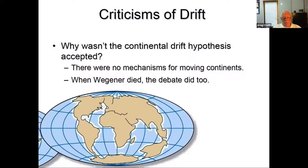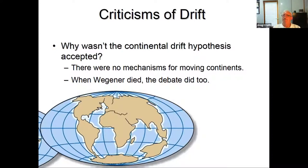It was a pretty good body of evidence for someone working in the early days of science. So why wasn't it accepted? The main opponents were geophysicists, who argued there was no way to push continents — thin as an eggshell relative to their area — edgewise through solid rock. The absence of a mechanism caused people to oppose it. When Wegener died, the debate kind of died with him.